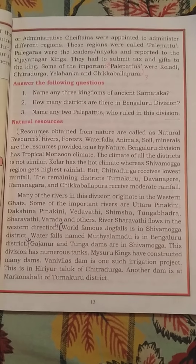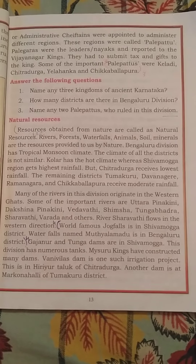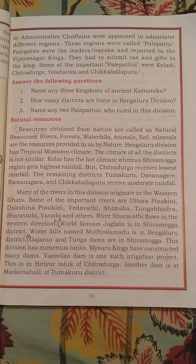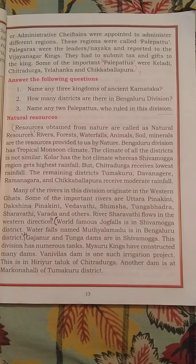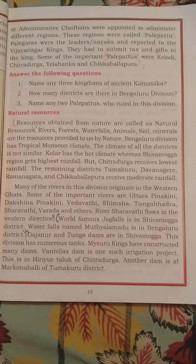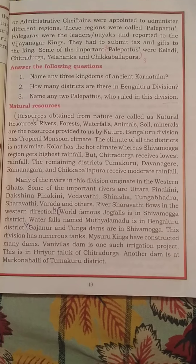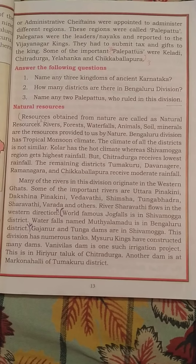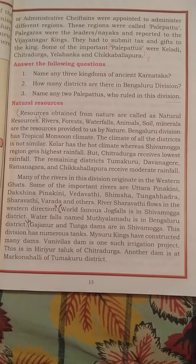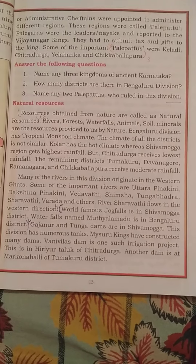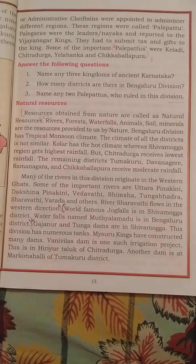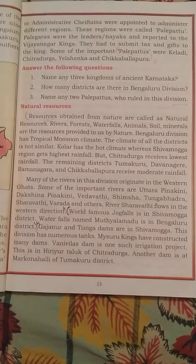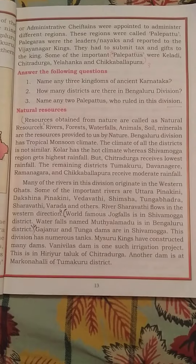River Sharavati flows in the western direction. The world-famous Jog Falls is in Shimoga district. The waterfall named Muthyalamadu is in Bengaluru district. Gajanuru and Tunga dams are in Shimoga. This division has numerous tanks. Mysore kings constructed many dams, and Vani Vilas Dam is one such irrigation project, located in Hiriyuru Taluk of Chitradurga. Another dam is at Markonahalli in Tumkuru district.